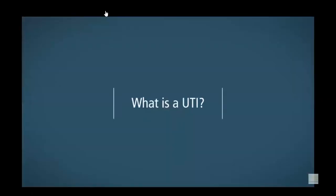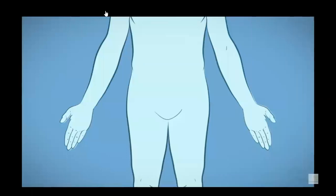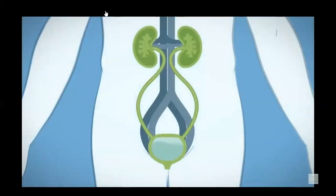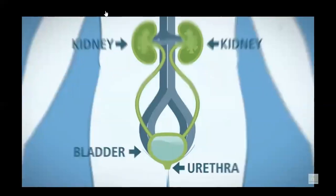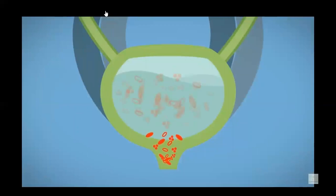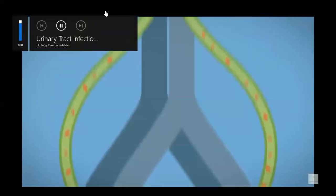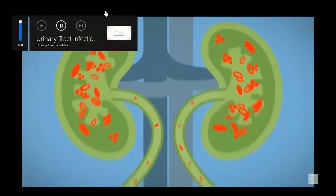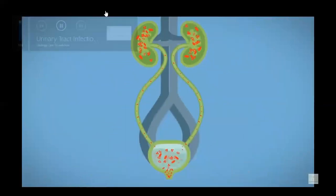What is a UTI? A urinary tract infection happens when bacteria grows in your urinary tract, which includes your kidneys, bladder, and urethra. Bacteria may get into the urine from the urethra and travel into the bladder. They may even travel up to the kidney, but no matter how far they go, bacteria in the urinary tract can cause problems.